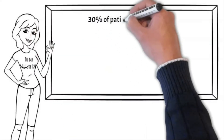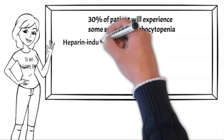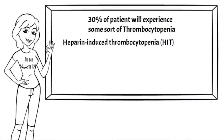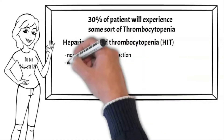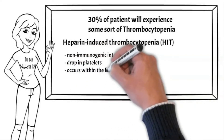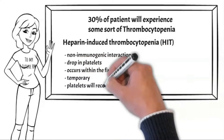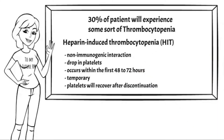About 30 percent of patients on heparin will experience some sort of thrombocytopenia. However, heparin-induced thrombocytopenia, or HIT, is more serious. There are two types of HIT. Type 1 is non-immunogenic, meaning the immune system is not involved. This results in a drop in platelets that typically occurs within 48 to 72 hours after heparin is initiated. The decrease in platelets is usually temporary and will recover once heparin is discontinued.